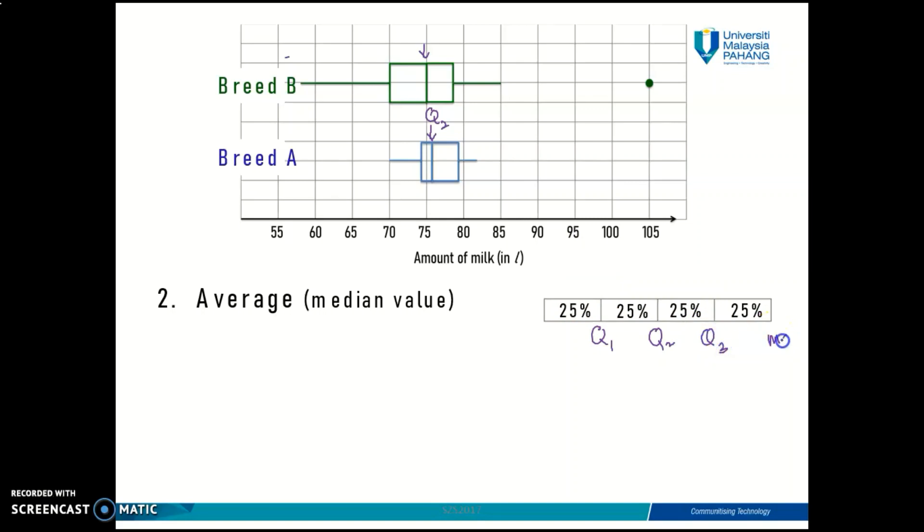and quartile 3. This is the maximum and this is the minimum. We have partitioned our data from minimum to maximum value into four equally sized partitions: 25% of our data here, 25% here, 25% here, and another 25% here. From minimum until quartile 2, how many percent of the data is in between? There are 50%, am I right?